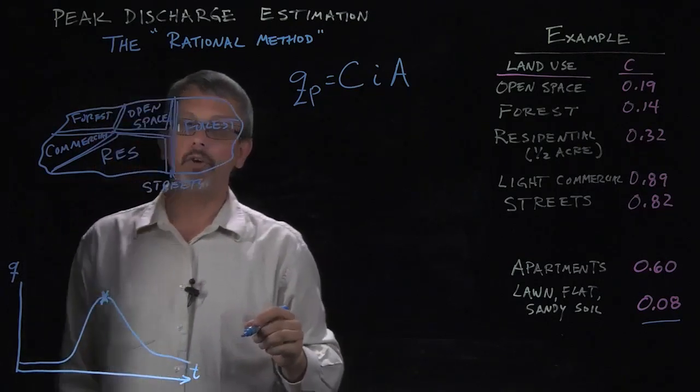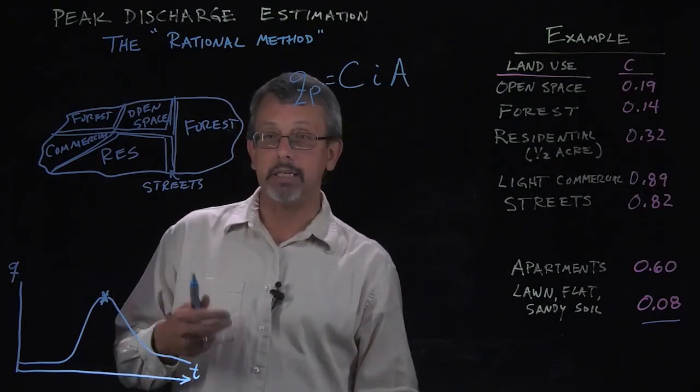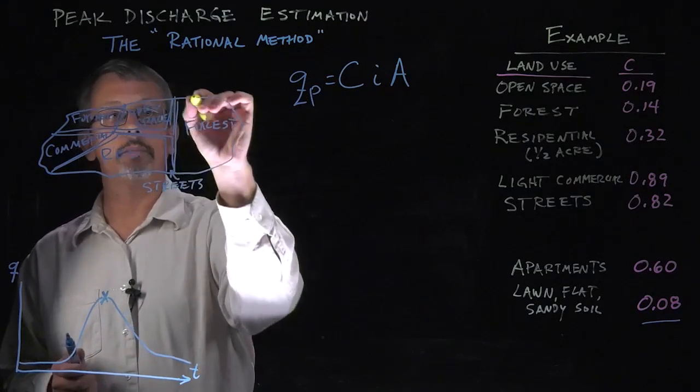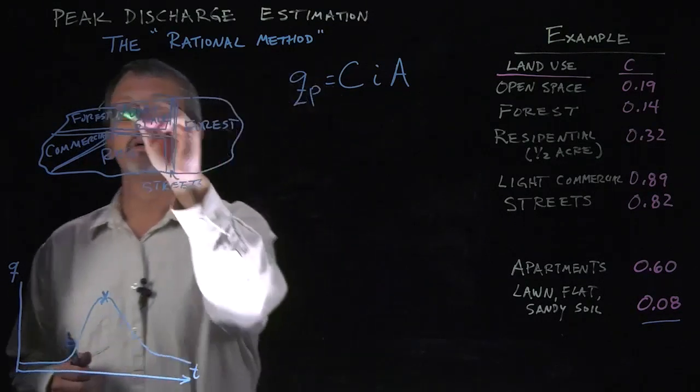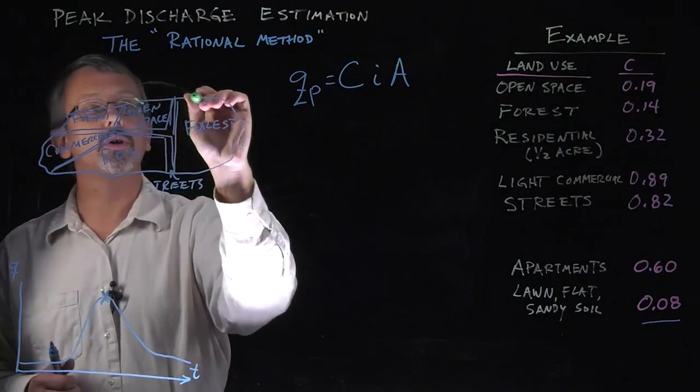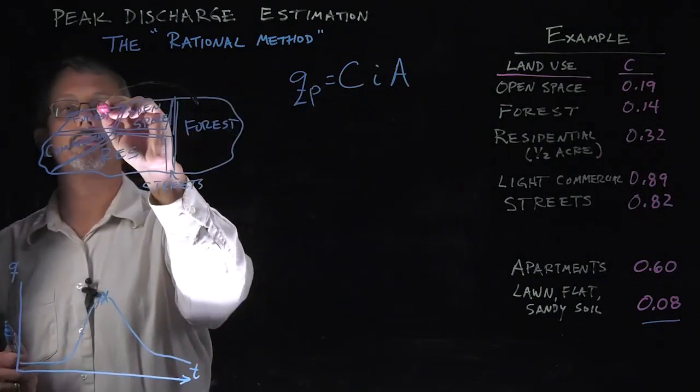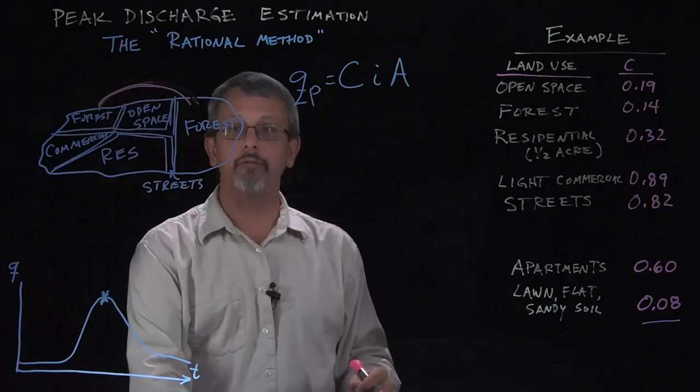And the goal here is if you're able to associate areas, parts of the area with each of these categories. For example, the forest might have a total amount, total area. There might be some area associated with the forest.